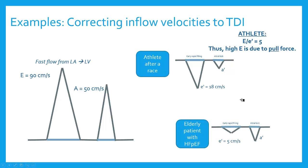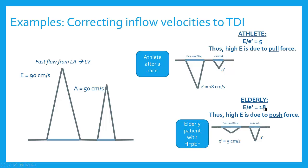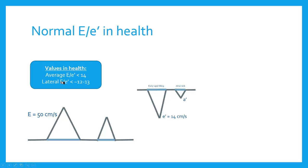Contrast that to an elderly patient with HFpEF. You might get the same Doppler inflow velocity pattern of E = 90 and A = 50, but the patient's E prime velocity may be as low as 5. In that situation, my E to E prime ratio is 18, which means I have a high left atrial pressure. The high E velocity is actually due to the push force — left atrial hypertension is driving the E velocity — because myocardial relaxation is slow, so it can't be the pull force; it has to be the push. A normal E to E prime is less than 14 (lateral) or less than 12–13. Anything less than 10 is considered very good, indicating normal left atrial pressure.